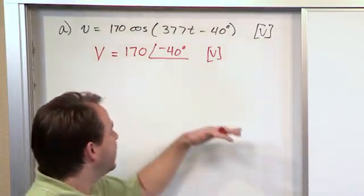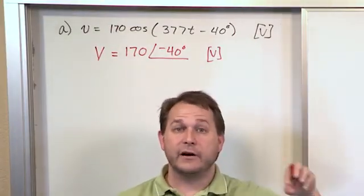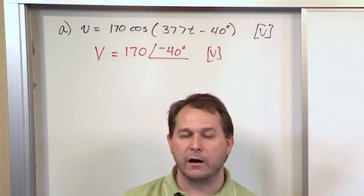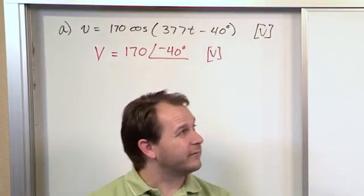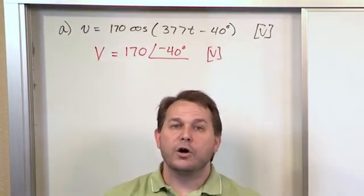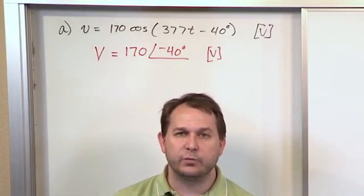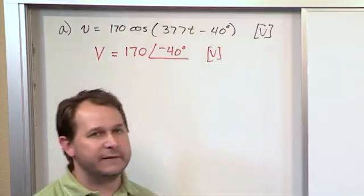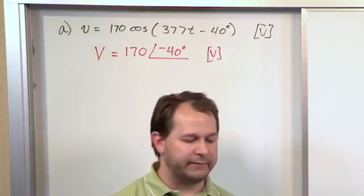So what we do is we convert the source to a phasor. We also end up converting the capacitors and inductors to imaginary numbers as well. And then we do a bunch of Kirchhoff's laws and stuff with imaginary numbers, and then we get an answer that's also going to be a phasor. But then when we write the answer back as a cosine again, we know the frequency is the same, and so we don't have to carry the frequency through the problem because we know what it is. It's the same as the source.